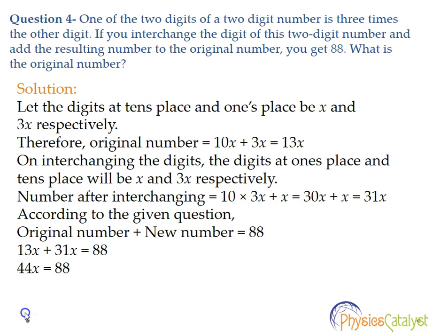If you interchange the digits of this two-digit number and add the resulting number to the original number, you get 88. What is the original number? In word problems, we need to first find the unknowns.